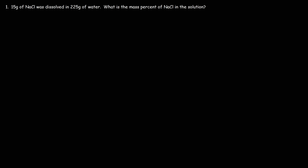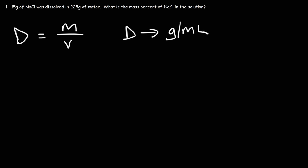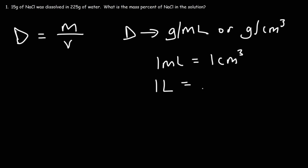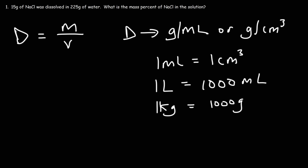Density is equal to mass over volume. In chemistry, density is typically expressed in units of grams per milliliter, or grams per cubic centimeter. One milliliter is equivalent to one cubic centimeter. Also, one liter is 1,000 milliliters, and one kilogram is equal to 1,000 grams. These are the most common conversions you'll use for solution concentration problems.